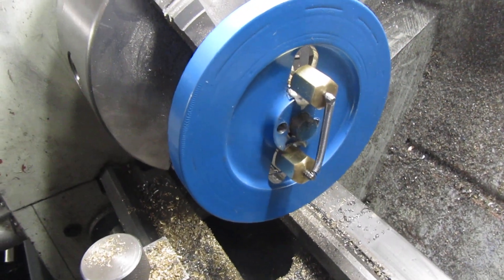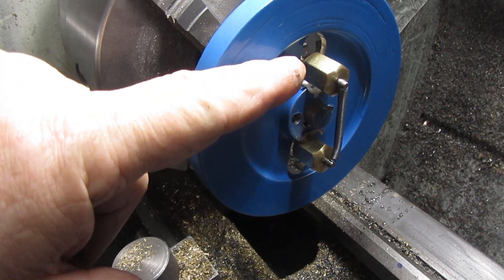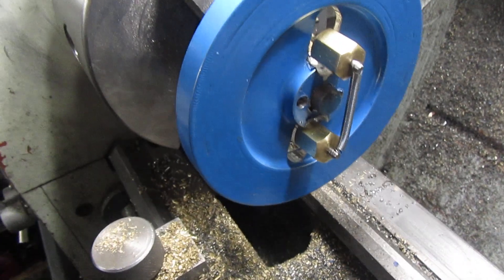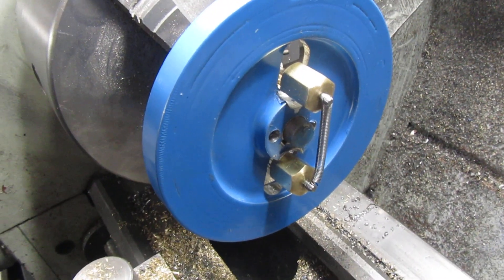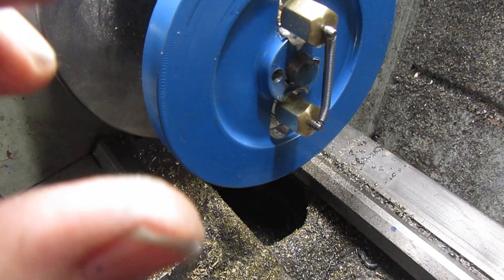On this side, you can see the flywheel. It's been modified with slots there and there, and the governor weights extend through the face of the flywheel. There's a spring that holds them together.